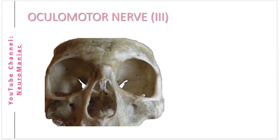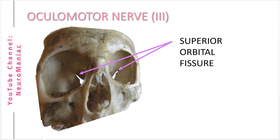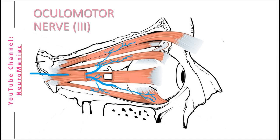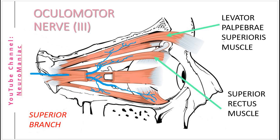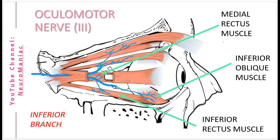If you look at this anterior view of the skull within the eye socket, this gap here is the superior orbital fissure. After exiting the cranial cavity, the nerve branches into the superior and inferior branch. The superior branch innervates the superior rectus and levator palpebrae superioris muscles, whereas the inferior branch innervates the inferior rectus, medial rectus and inferior oblique muscles, as well as ciliary muscles and sphincter pupillae.